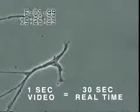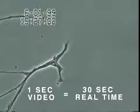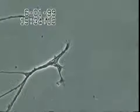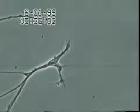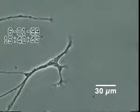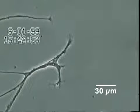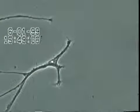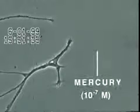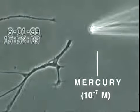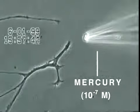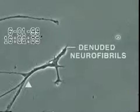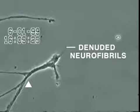In this experiment, neurons also isolated from snail brain tissue were grown in culture for several days, after which very low concentrations of mercury were added to the culture medium for 20 minutes. Over the next 30 minutes, the neurite membrane underwent rapid degeneration, leaving behind the denuded neurofibrils seen here.